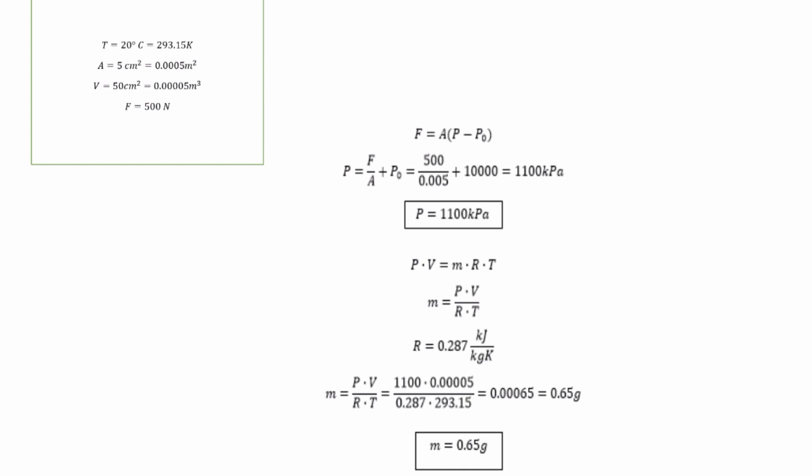Next, using the ideal gas equation, we can calculate the air mass. PV equals mRT, so m equals PV over RT.